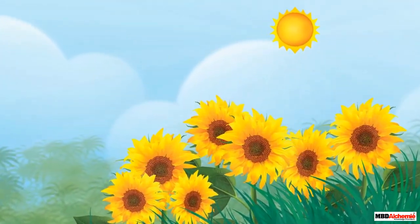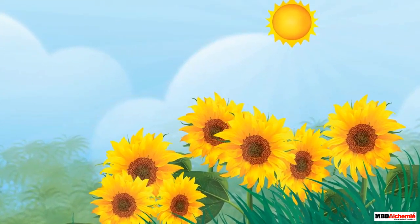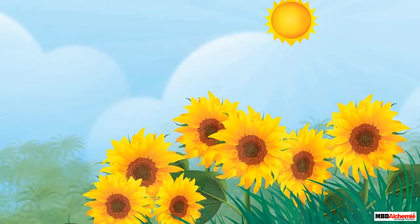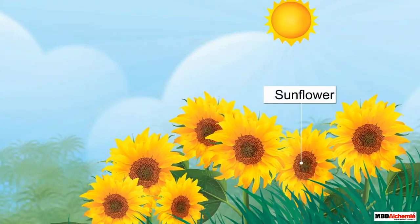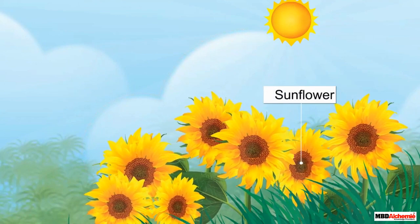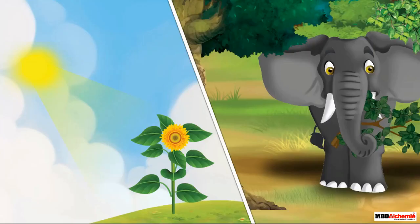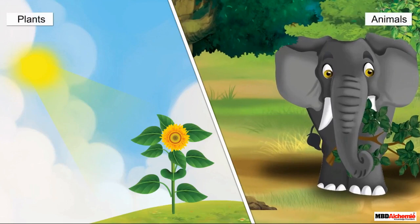Plants, on the other hand, are fixed to the ground. They can only move their parts. For example, a sunflower plant turns its face towards the Sun.